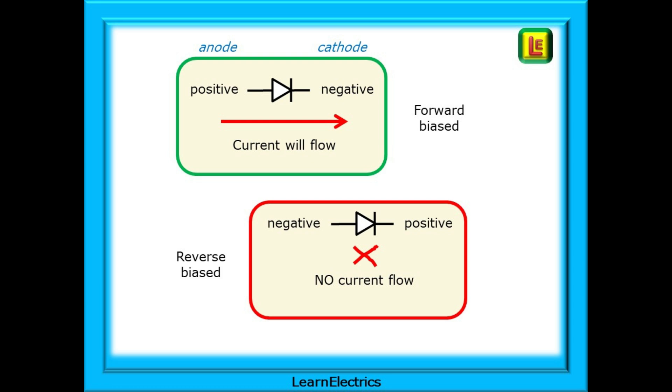Reverse bias is when the anode is more negative than the cathode. Current stops flowing. The tap is turned off.